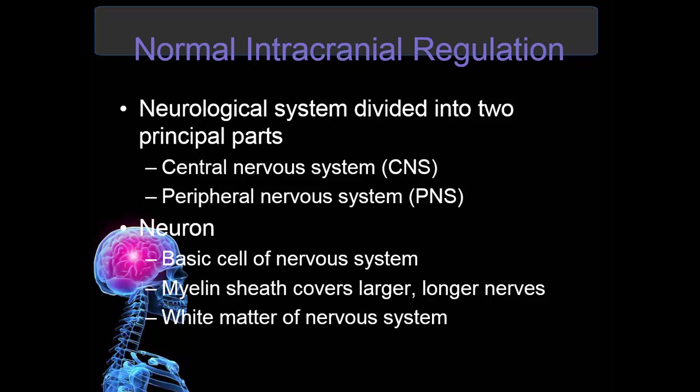Normal intracranial regulation. The neurologic system is divided into two principal parts: the central nervous system, which includes the brain and spinal cord, and the peripheral nervous system, which includes the cranial nerves and the spinal nerves. Neurons are the basic cells of the nervous system — specialized cells that send impulses throughout the body. Myelin sheath covers larger and longer nerves and helps speed the rate of nerve impulses. White matter is also part of the nervous system.